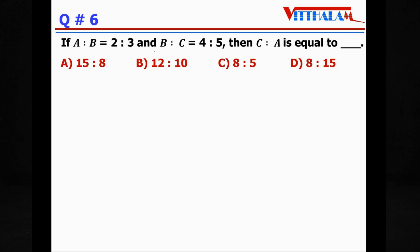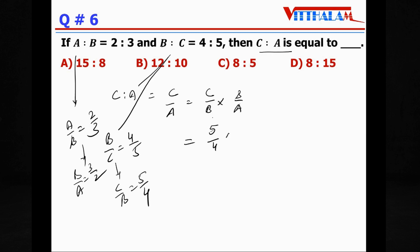Question 6: If A:B = 2:3 and B:C = 4:5, then C:A is equal to? So C:A is nothing but C/A, and C/A is nothing but (C/B) × (B/A). Now C/B is reciprocal of B/C. Here B:C, that is B/C = 4/5, and A:B, that is A/B = 2/3. So C/B is 5/4, and B/A is 3/2. So C/B is 5/4 into B/A, that is 3/2. So 15/8. Therefore it is 15:8. Answer is A.